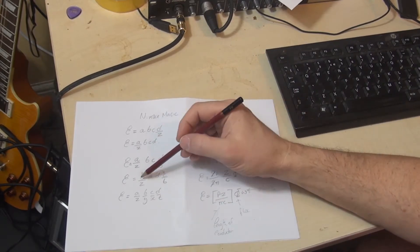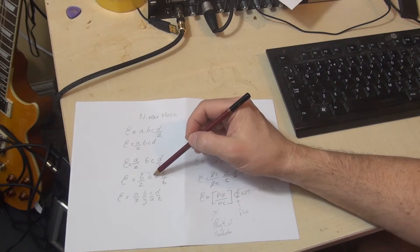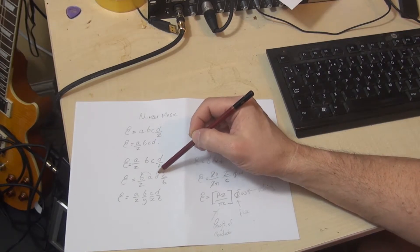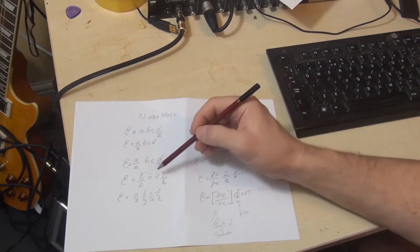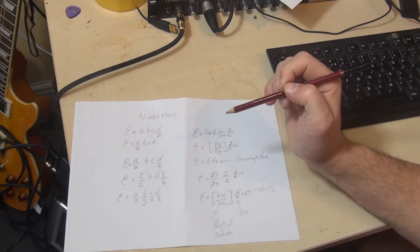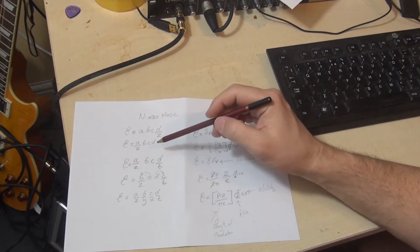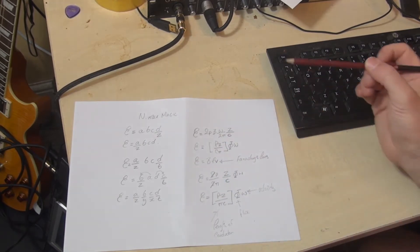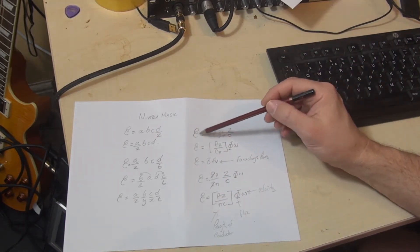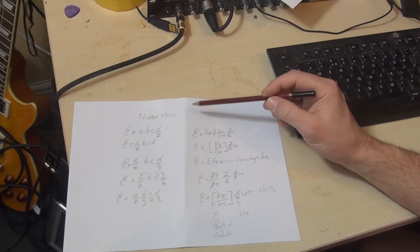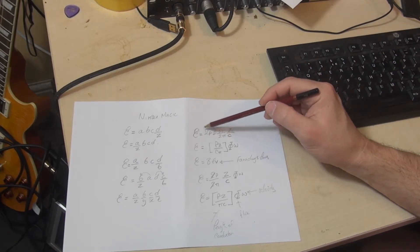It doesn't matter, any of these numbers, sorry, any of these terms along the top line can replace the numerator of the fraction. So both of these techniques are extremely useful when it comes to rearranging equations. This equation I've got here is to do with the EMF induced in an armature.